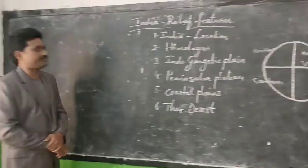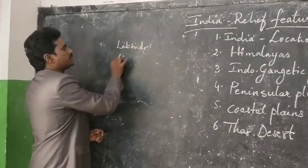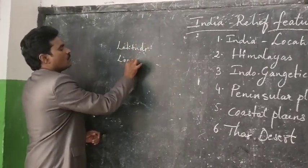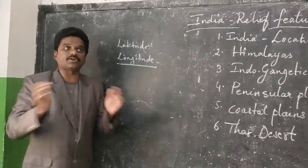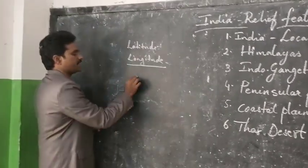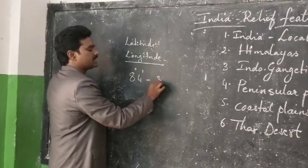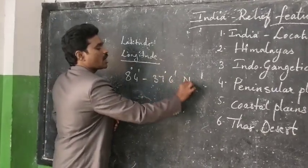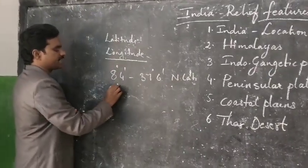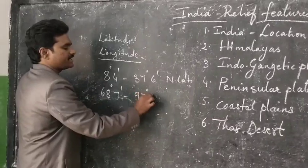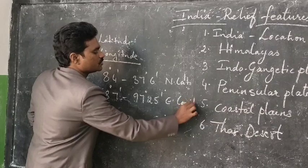Now coming to a very important point from the examination point of view: according to latitude and longitude, what is the latitudinal and longitudinal extent of India? India is located between 8 degrees 4 minutes to 37 degrees 6 minutes north latitudes, and between 68 degrees 7 minutes to 97 degrees 25 minutes east longitudes.